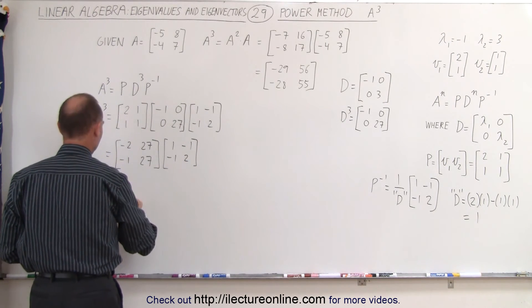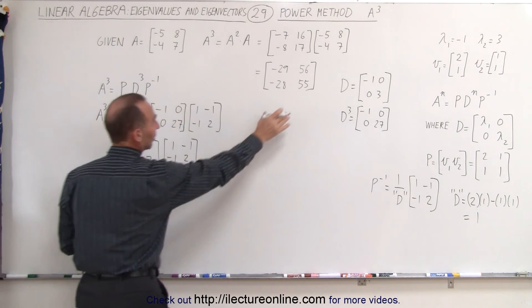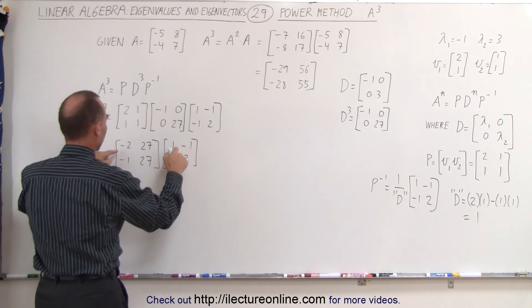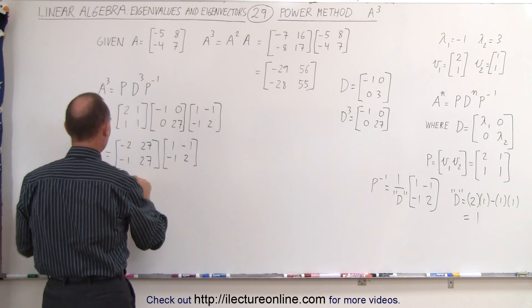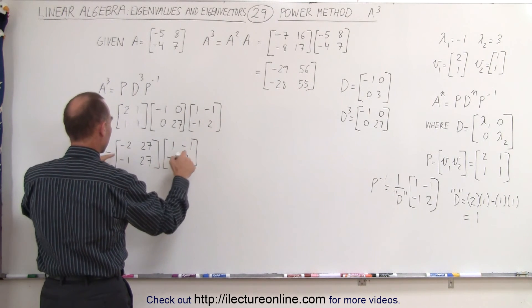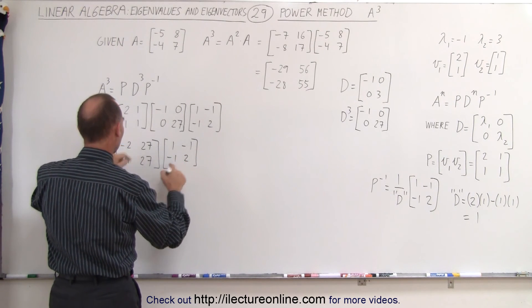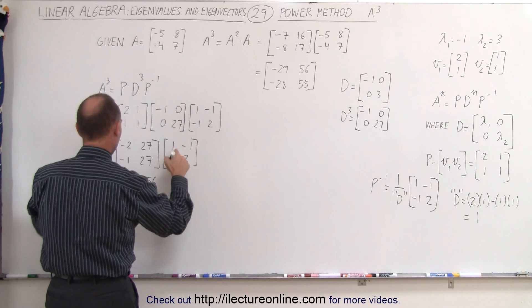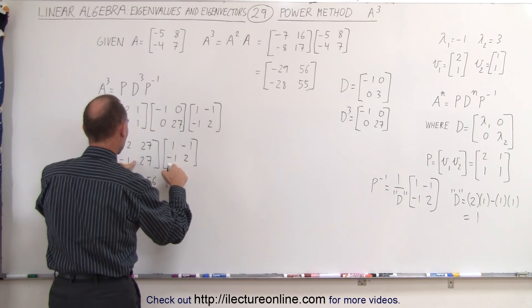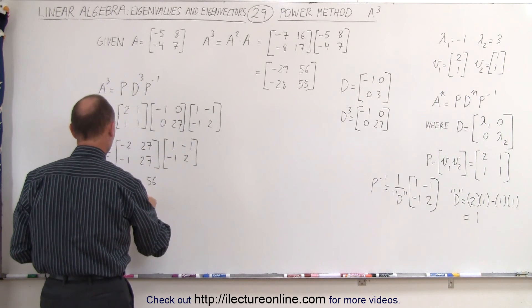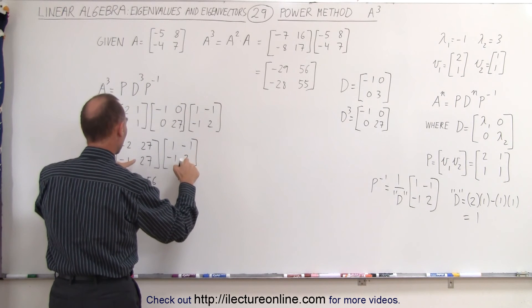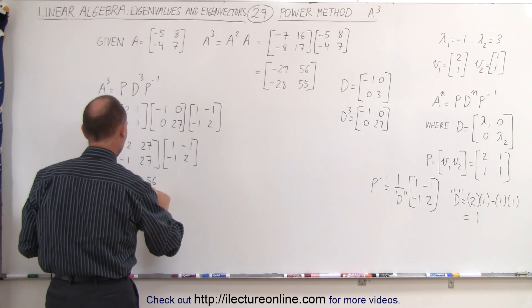And this gives us, and again, the result should be exactly the same as what we have over there. Negative 2, negative 27 is negative 29. 2 plus 54 is 56. Negative 1 minus 27 is minus 28. And 1 plus 54 is 55.